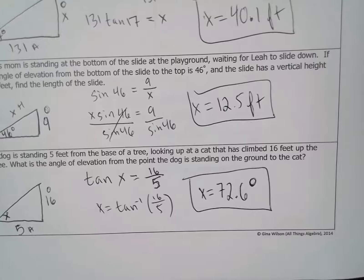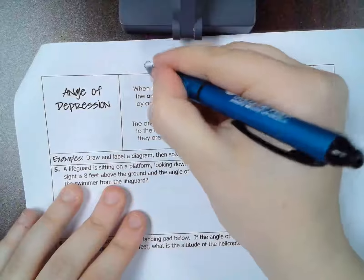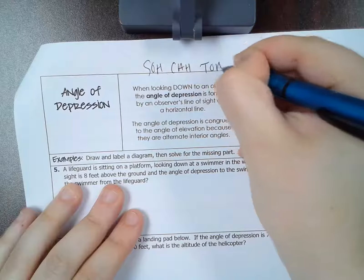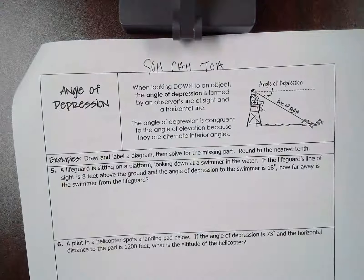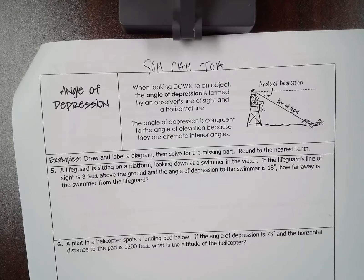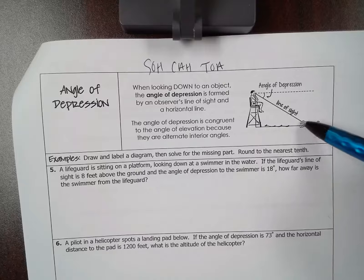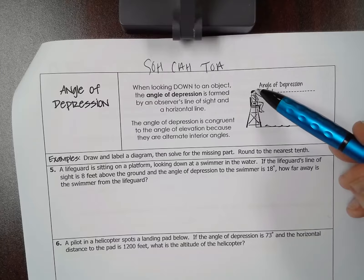When you're ready, turn the page and we'll go over angle of depression. Let's rewrite SOHCAHTOA at the top of our page. When looking down at an object, the angle of depression is formed by an observer's line of sight and the horizontal line. The angle of depression is congruent to the angle of elevation because they are alternate interior angles, so looking down is the same as looking up.